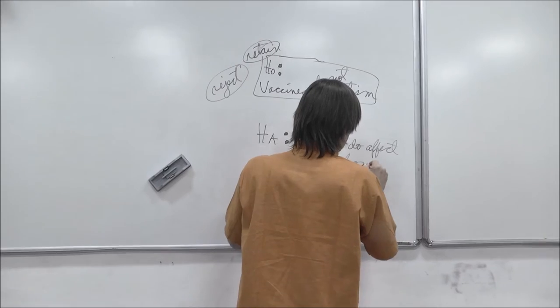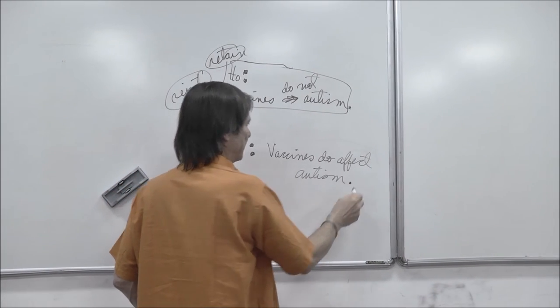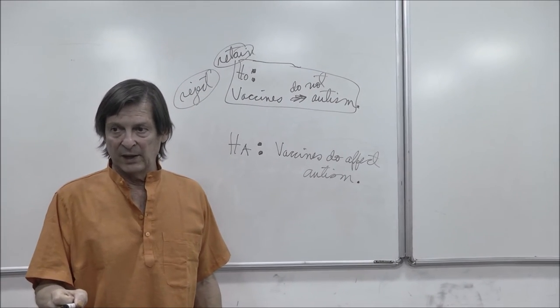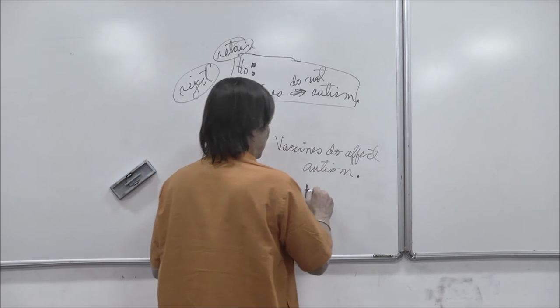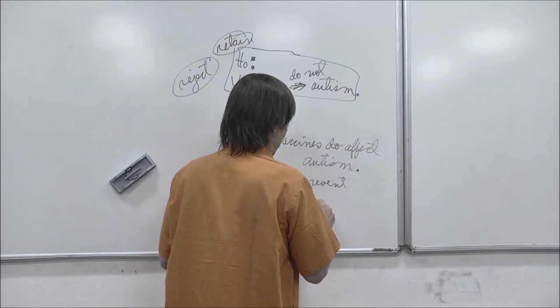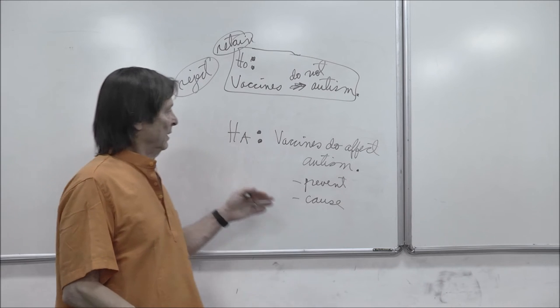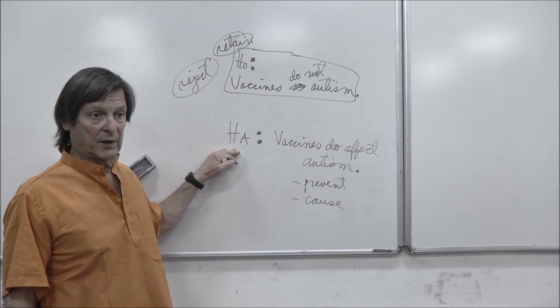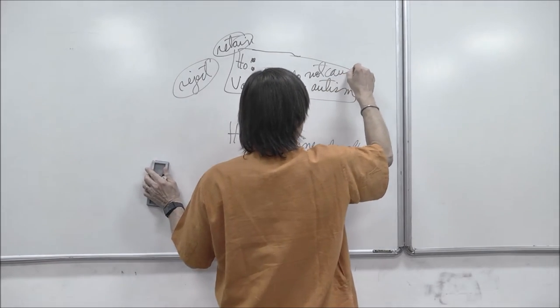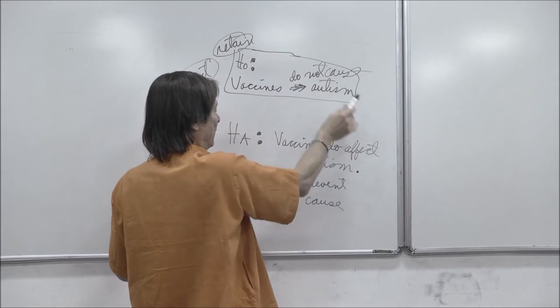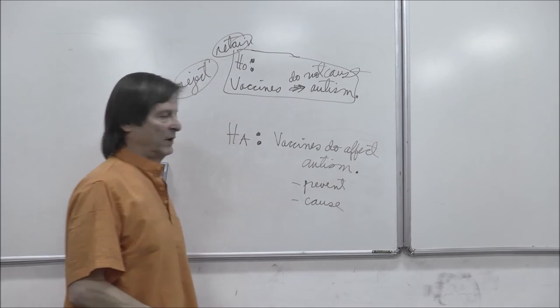Now, notice, too, I'll put it here at the end of the sentence. Vaccines do affect autism. There's a possibility that it could go two ways. One is that vaccines actually prevent autism, and another is that vaccines actually cause autism. And we'll talk about this more, but that's what we call the non-directional alternative hypothesis. So here we're saying it has no effect, do not cause or do not affect autism. It has no effect upon autism. Here we're saying they do have an effect, and it's non-directional. It could either be it prevents or causes.